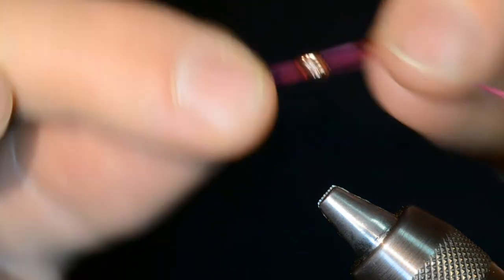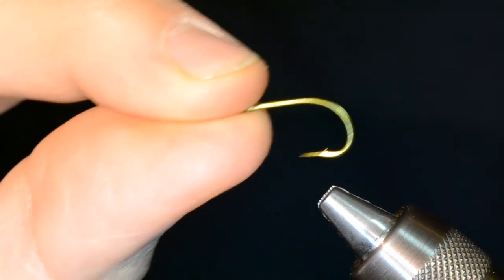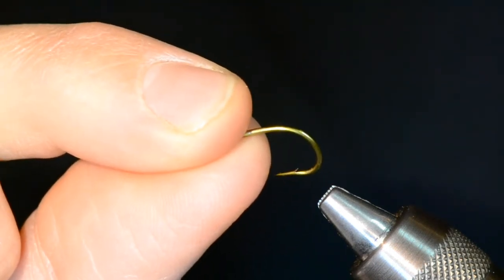Next step is to grab that hook. This TMC 105 size 6, it's a really short, really heavy hook. I like it for this worm. It's got a nice gap, it does a great job, and you got a little barb on there that sometimes is kind of tough to get through the eye of the bead.